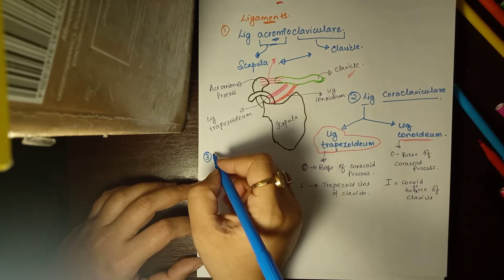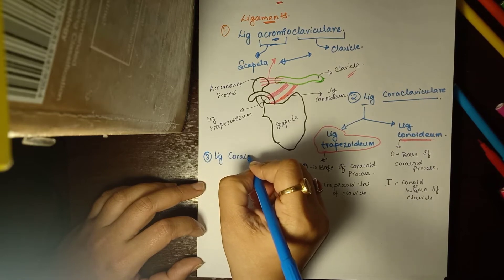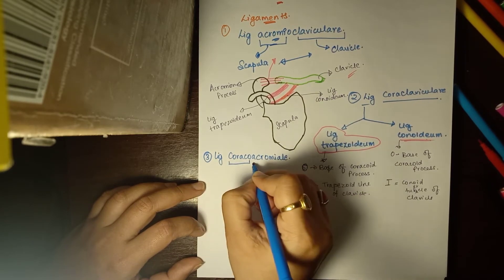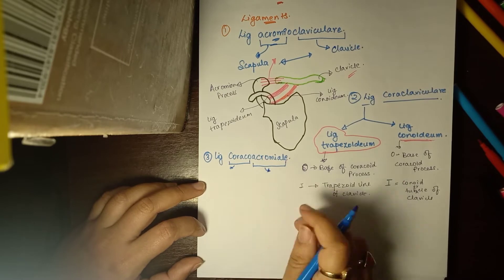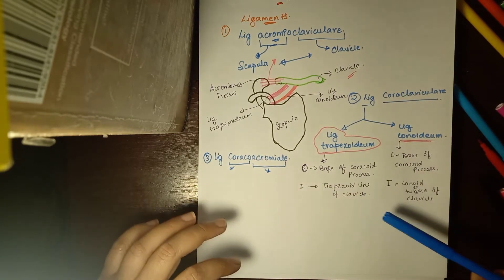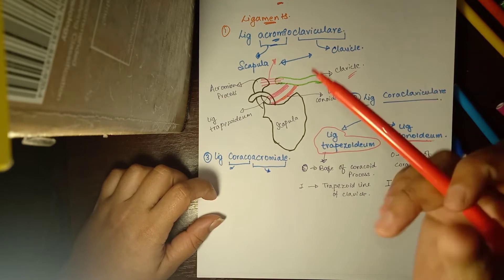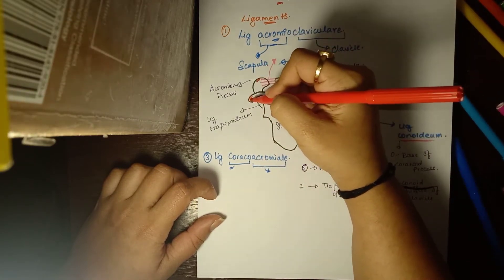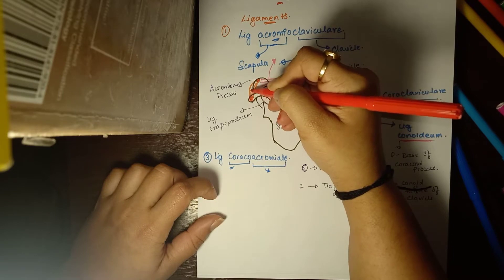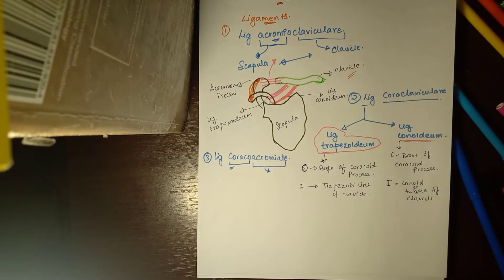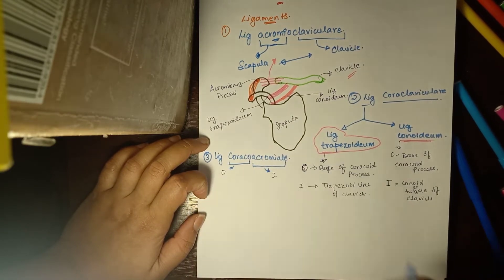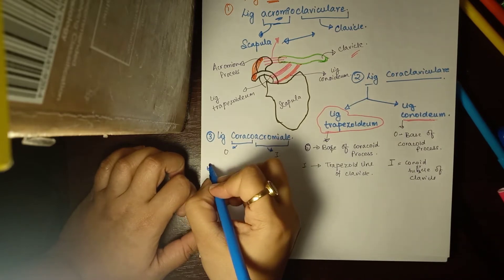The third ligament of the scapula is the coracoacromial ligament. By the name, you can split it into two parts: coracoid process and acromion process. This ligament is actually found within the scapula only - it joins the coracoid process to the acromion process. There is no involvement of the clavicle. By the name you can easily know its origin and insertion.